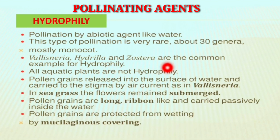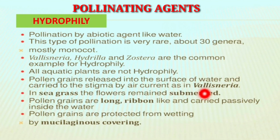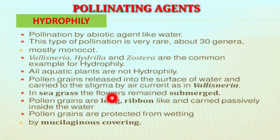However, not all aquatic plants are hydrophilous plants. In Vallisneria, pollen grains are released on the surface of the water and carried to the stigma by air currents. In sea grasses, the flowers remain submerged and pollen grains are long and ribbon-like, carried passively inside the water. The pollen grains are protected from wetting by a special mucilaginous covering.